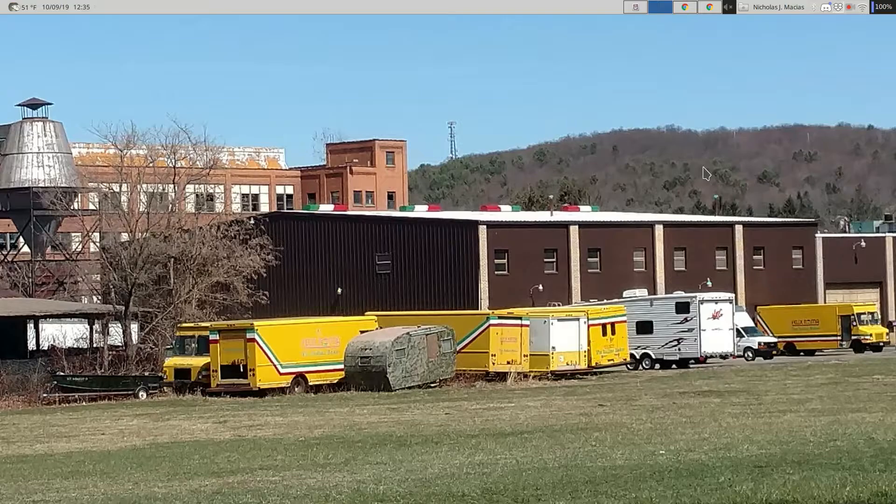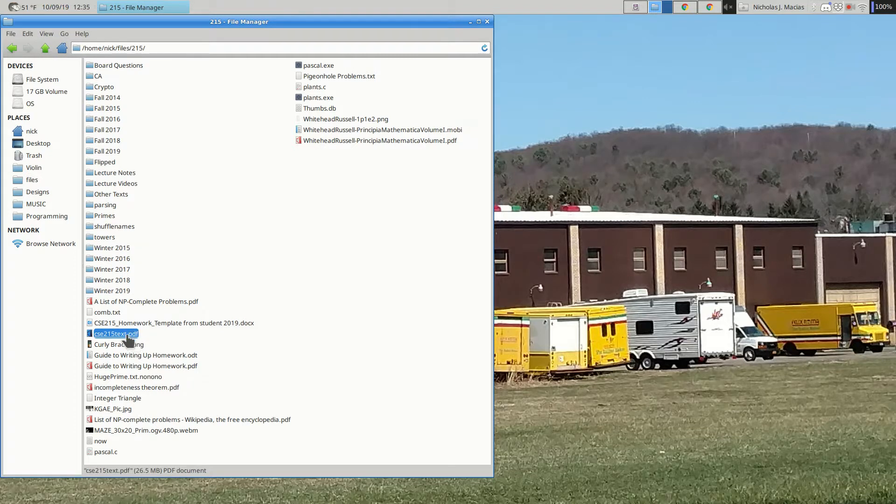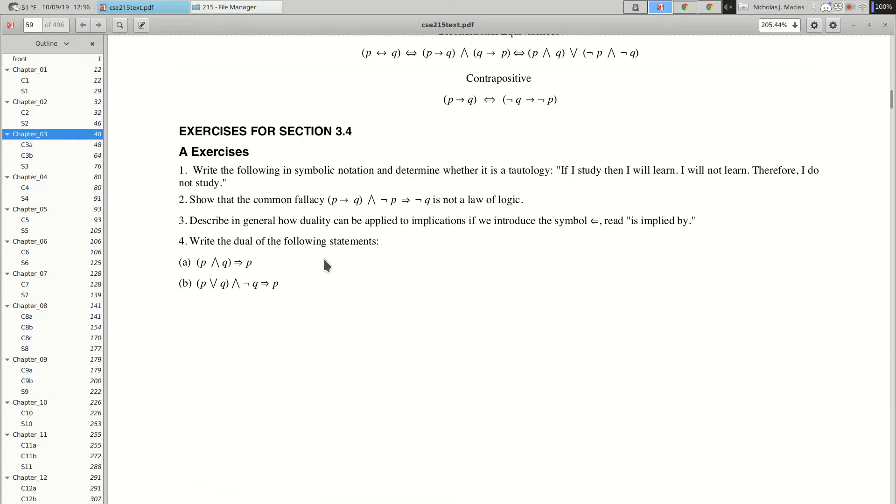The 3.4 number 2. Show that the common policy is not a law of logic. It's a little unclear how to do that with a proof. I mean, we can try and show that we're not able to conclude not Q. That doesn't necessarily prove it. If I use conditional equivalence and then I have proof P, that doesn't necessarily just prove not Q.